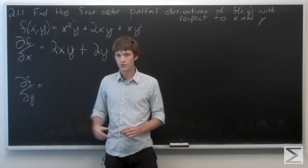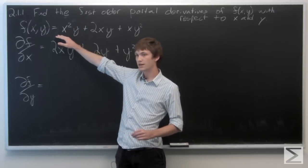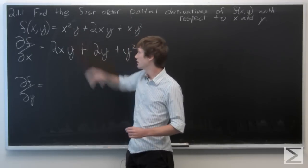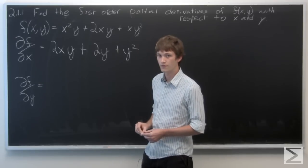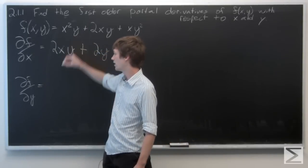Now the partial derivative with respect to y, we're going to do the same thing, except we're going to treat the x's as if they're constants. So take the partial derivative of f with respect to y. We take the derivative of y, we get 1.